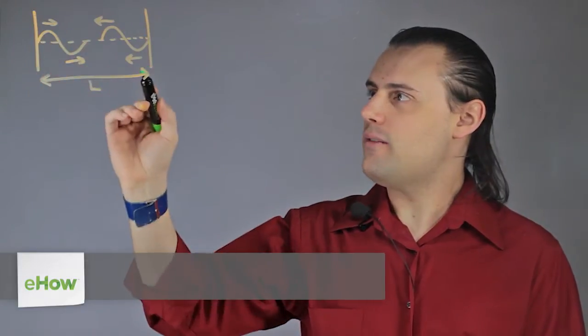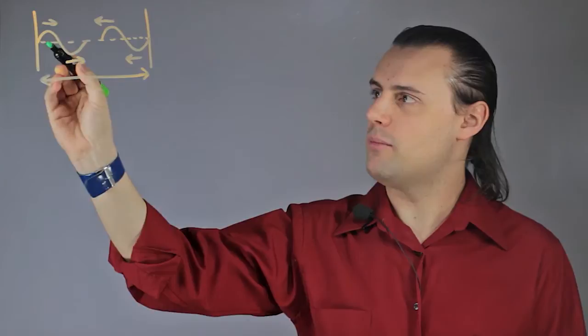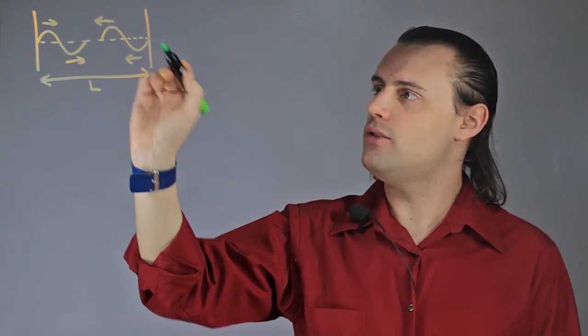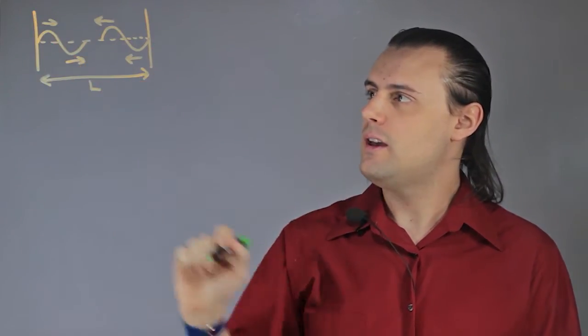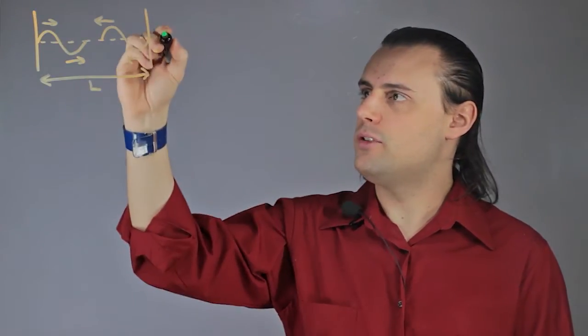So here I have a cavity and two traveling waves. One wave is traveling from left to right, and another wave is traveling from right to left. If we assume they have the same amplitude, we can call that amplitude A.